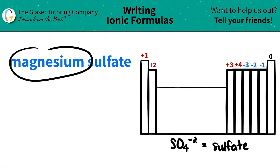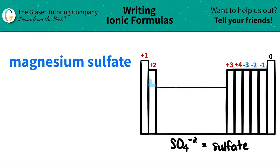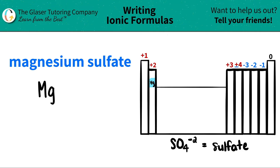The first thing I see is magnesium. I'm going to scan the periodic table to see where magnesium is, and magnesium is right over here. Magnesium is represented by Mg, and magnesium being in group 2 — all group 2 are metals. They're called alkaline earth metals, and they all share a common oxidation charge of plus 2. So magnesium has a plus 2 charge.